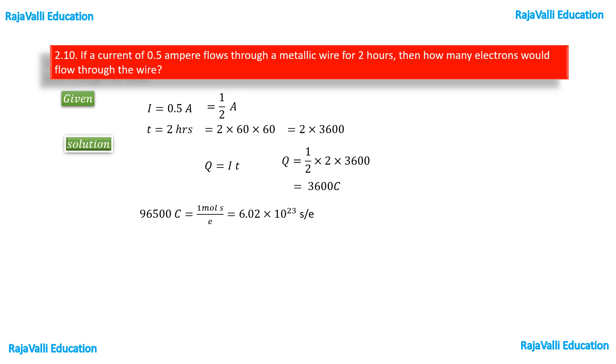So from this we can calculate one coulomb of electricity will contain 6.02 times 10 to the power of 23 divided by 96500 electrons. In this wire, 3600 coulombs is passing. So for 3600 coulombs, how many electrons are flowing through the wire we have to calculate.